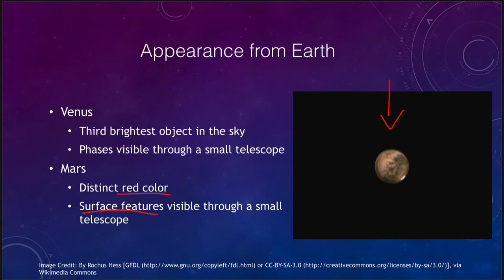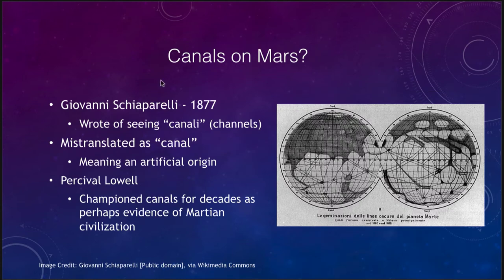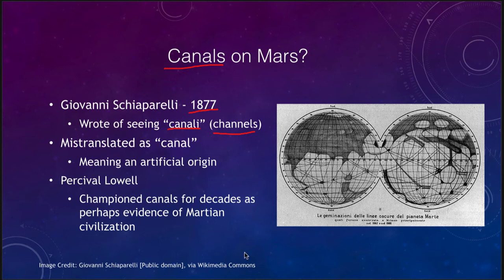One of the big things about Mars that was thought long ago was whether there were canals on Mars. This idea came from Italian astronomer Giovanni Schiaparelli, who observed in 1877 and wrote in his writings that he saw canali on Mars. Canali is literally translated as channels. However, you can see from the word itself how it could be mistranslated as canals.